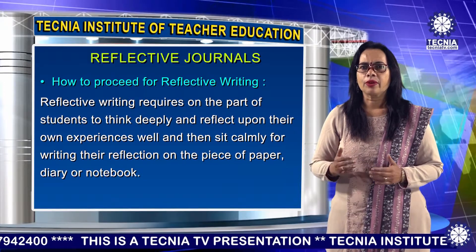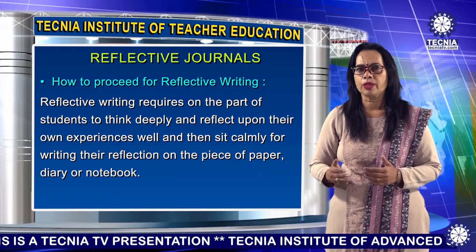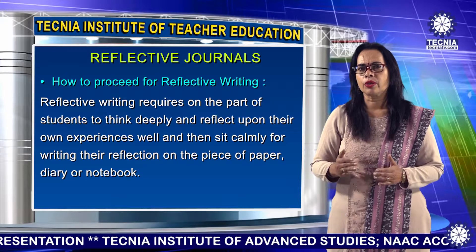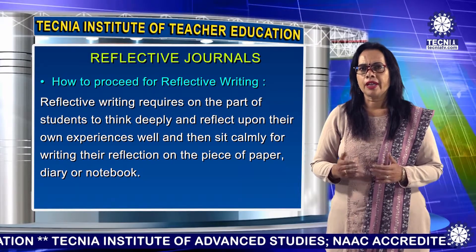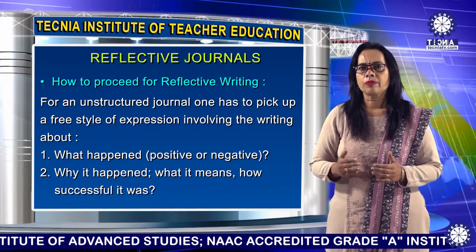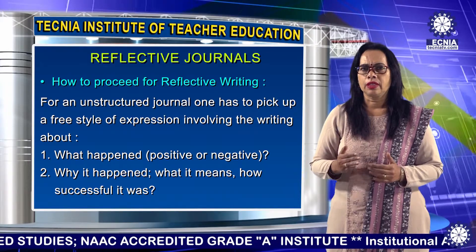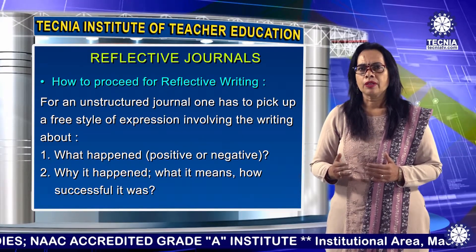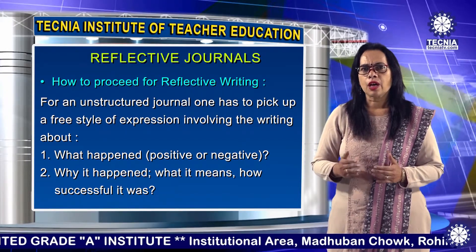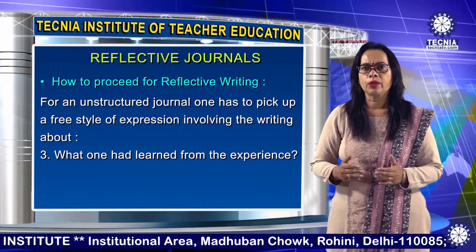How to proceed for reflective writing: Reflective writing requires the student to think deeply and reflect upon their own experiences, then sit calmly and write their reflection on a piece of paper, diary, or notebook. For an unstructured journal, one has to pick up a free style of expression involving writing about: What happened — positive or negative? What does it mean? How successful was it? What did one learn from the experience?